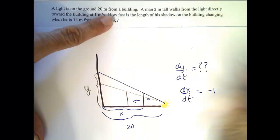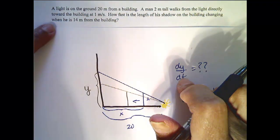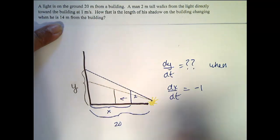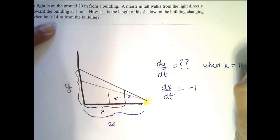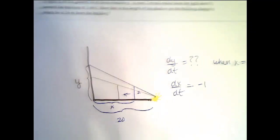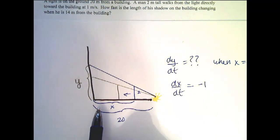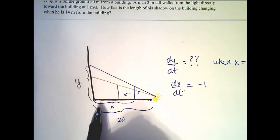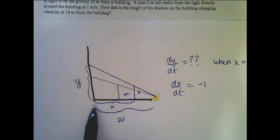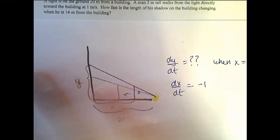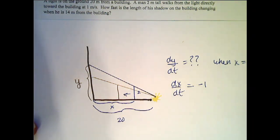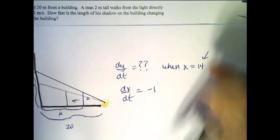So we're trying to find out how fast is the length of his shadow on the building changing when he is, so we need to write this down, when he is 14 meters from the building. So when X equals 14, it is tempting to write 14 here for X, but we don't. It's 14 at a very particular instant, which we don't want to—we're not sketching that instant, we're sketching here the entire situation. And we want to make sure we're clear on what's changing and what's not. We'll plug in this value only after we've taken the derivative.